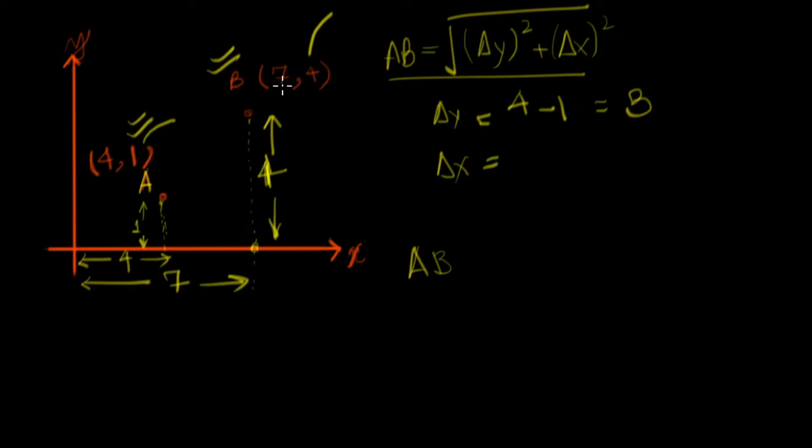For x, the difference, that means delta x, is the difference in the x coordinates, which is 7 minus 4. 7 from B, 4 from A, and that is also 3.